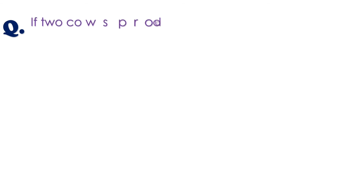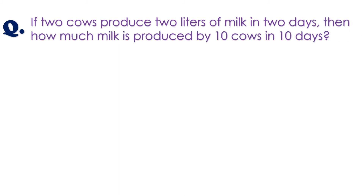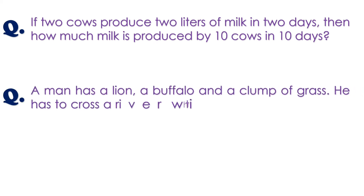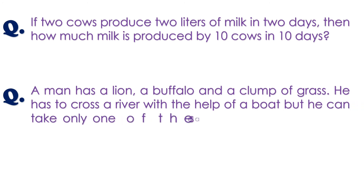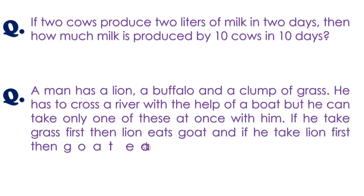Let's move to another question. Today we have a set of three questions and you have to answer all of them. Question one: if two cows produce two liters of milk in two days, how much milk is produced by 10 cows in 10 days? Question two: a man has a lion, a buffalo, and a clump of grass. He has to cross a river with a boat but can take only one of these at a time.